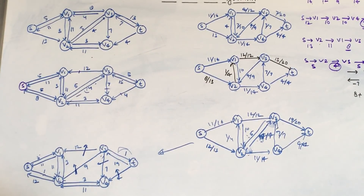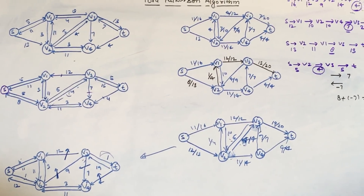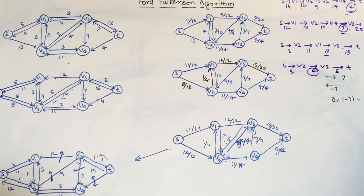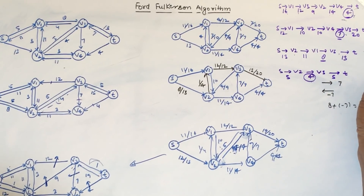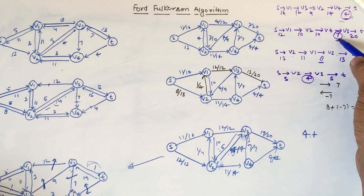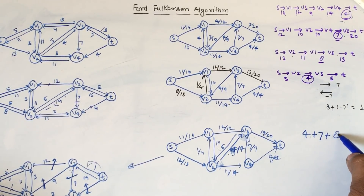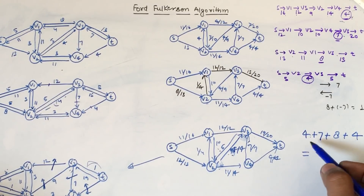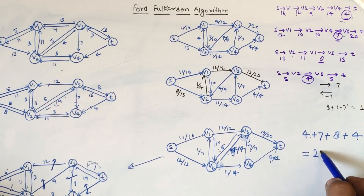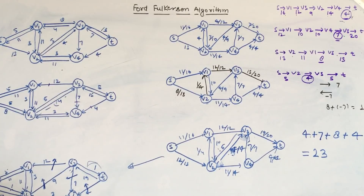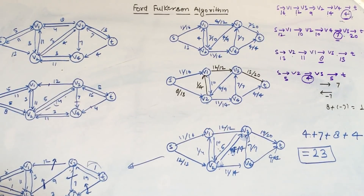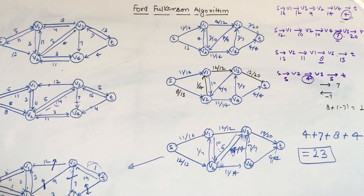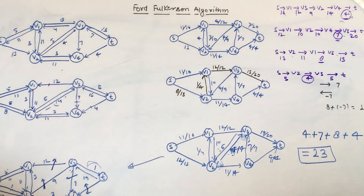There is no augmented path available after this iteration. The total maximum flow is the sum of the bottleneck capacities of all paths considered: first path bottleneck 4, second path bottleneck 7, third path bottleneck 8, and fourth path bottleneck 4. So the total maximum flow in the network is 4 + 7 + 8 + 4 = 23. This is how the Ford-Fulkerson algorithm works. If you have any doubts, you can ask in the comment section.